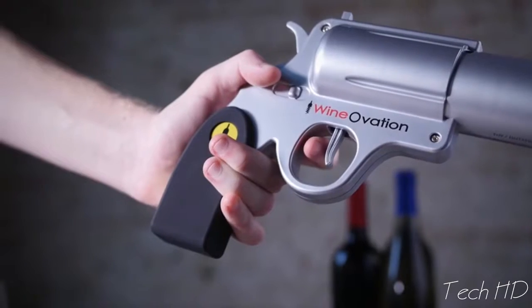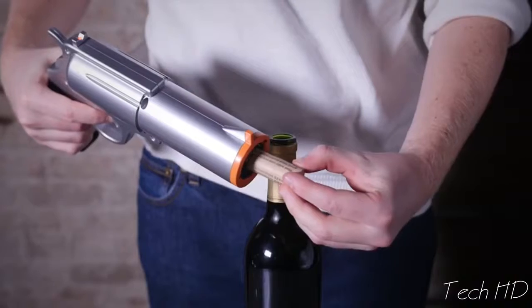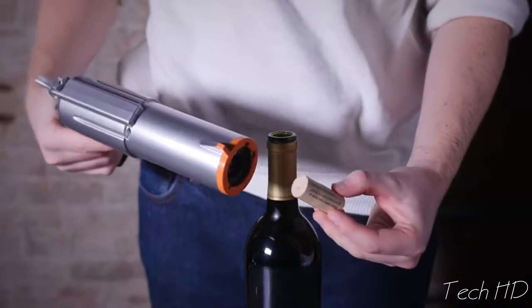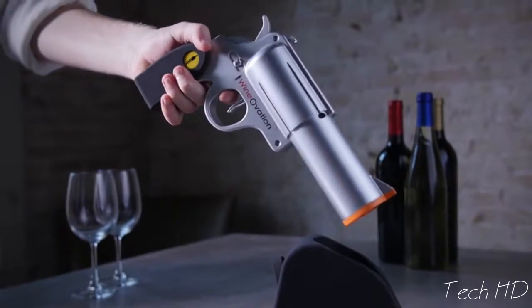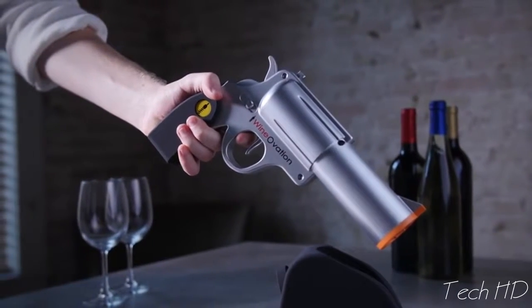Then push the trigger forward to extract the cork from the barrel of the gun. Be a boss at your next gathering when you whip out the wine gun to open that vintage cab.